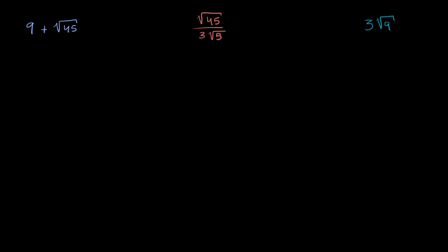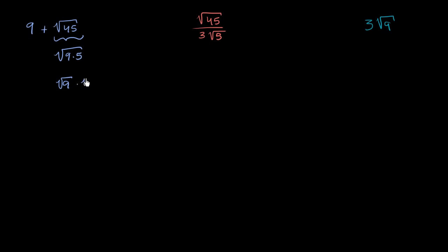9 is clearly a rational number. You can express 9 as 9 over 1, or 18 over 2, or 27 over 3 — it can clearly be expressed as the ratio of two integers. But what about the square root of 45? The square root of 45 is the same thing as the square root of 9 times 5, which equals the square root of 9 times the square root of 5. The principal root of 9 is 3, so it's 3 times the square root of 5. So this expression is 9 plus 3 times the square root of 5.